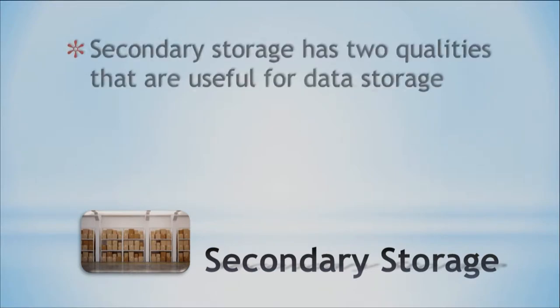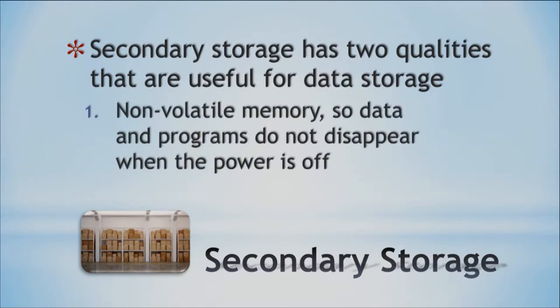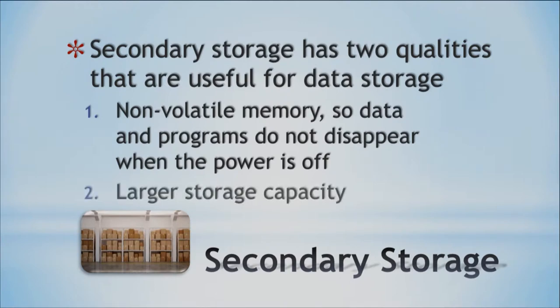So for secondary storage, there are two key qualities. We talked about volatile — now we talk about non-volatile. Non-volatile memory means data and programs do not disappear when the power is off. So when we turn it off, everything's still there. Also compared to RAM, the storage capacity is a lot larger — it holds more data. So it's long-term storage and the data stays even when the power is off.